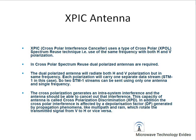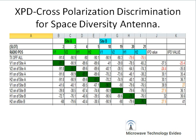In a cross polarization spectrum, a dual polarization antenna is required. This antenna radiates both horizontal and vertical polarization, but on the same frequency. Each polarization carries one separate data stream, meaning there are two independent channels. The cross-polarization generates intra-system interference, and the antenna must cancel out this interference. This capacity of the antenna is called Cross Polarization Discrimination, or XPD.